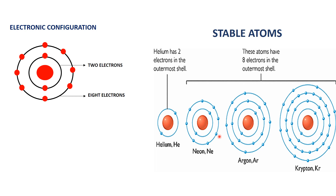Now if the atom has only one shell, like the helium atom has only one shell, the stable state can be achieved if two electrons are present in it. So the helium atom has one shell and it has two electrons in the outermost shell, so helium atom is a stable atom. In case of neon, argon, and krypton, if the atom has two or more than two shells, then the stable state is achieved when the outermost shell has a maximum of eight electrons, which makes these atoms unreactive or stable. They do not take part in any chemical reactions.